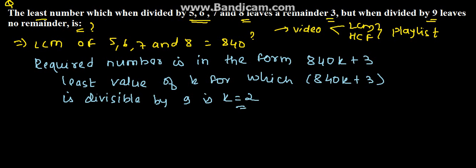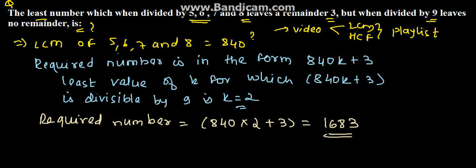So we can say that the required number is equal to 840 into 2 plus 3, which is equal to 1683. So 1683 is the required number which is the solution for the given problem.